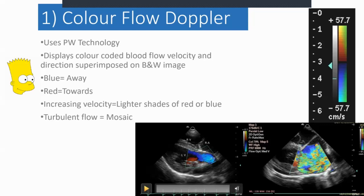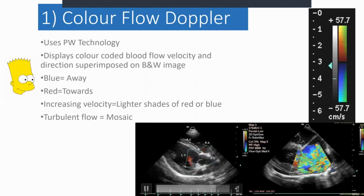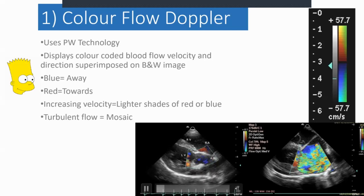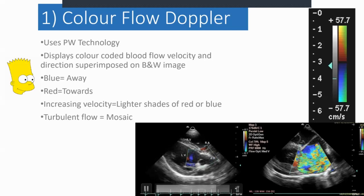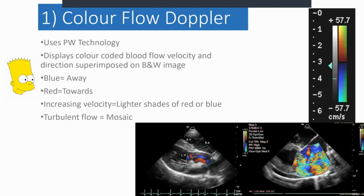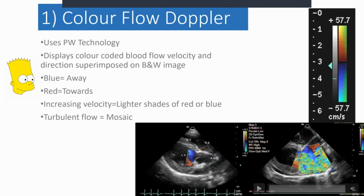Here's an example — this is aortic outflow. You can see a blue signal going through the aortic valve, pretty much all blue, signifying blood moving in a general direction away from the probe. That's laminar flow. Whereas on the right-hand side at the bottom is turbulent flow — this is a dog with severe mitral regurgitation, and you've got this mosaic effect created by the turbulence.